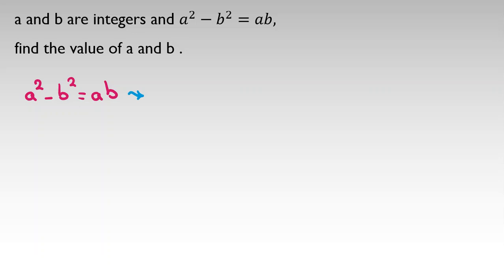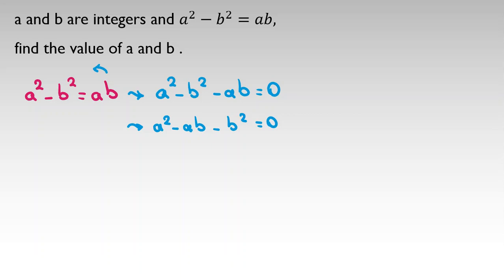I take ab to the left-hand side: a squared minus ab minus b squared equals zero. I only change the places of the terms. Now, to solve this, I want to use an identity.